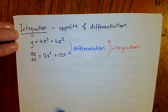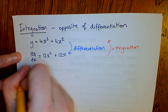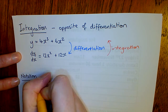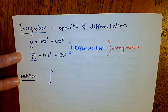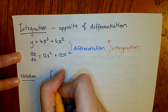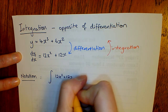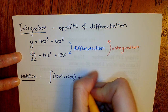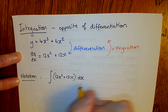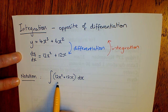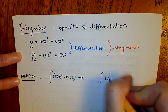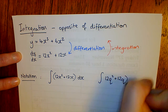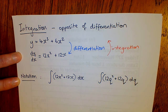The first thing we need to worry about is notation. In differentiation we have y and dy/dx. For integration we have this symbol here which means integrate. So if we're integrating 12x squared plus 12x, we integrate with respect to x and put a dx here — that just means we're integrating something that has x's in it. If you were integrating something with q's in it, like 12q squared plus 12q, you would have a dq there.